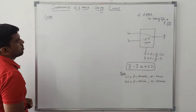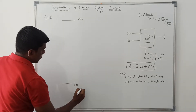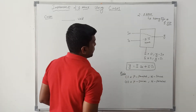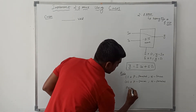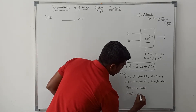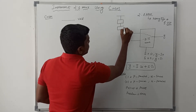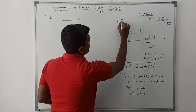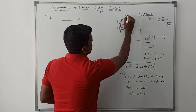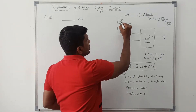CMOS structure for 2-to-1 mux. This one is VDD, this one is VSS — power and ground. First I draw the pull-up network. Pull-up network consists of PMOS, pull-down consists of NMOS. CMOS is a combination of pull-up network and pull-down network. Output is obtained between the pull-up network and pull-down network.